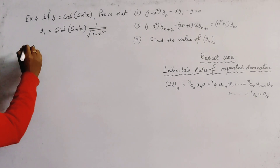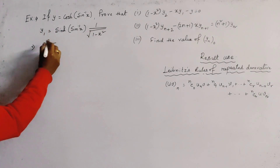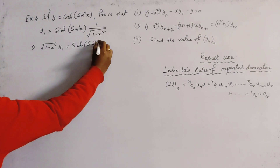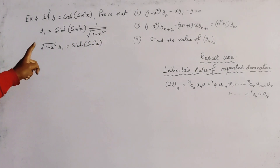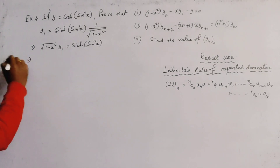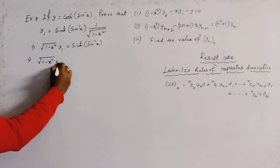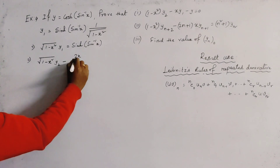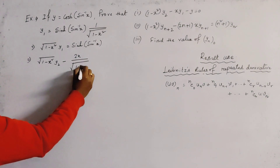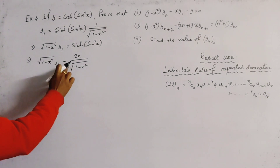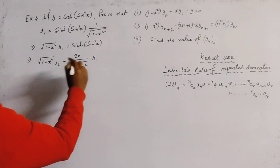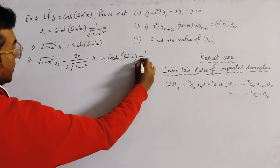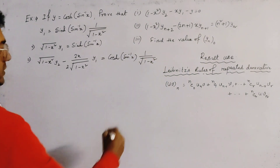Now we multiply through by the root (1 minus x squared) on the left side, getting: root(1 minus x squared) · y₁ equals sinh(sin⁻¹ x). Again we differentiate both sides with respect to x. The derivative of root(1 minus x squared) is minus 2x divided by 2·root(1 minus x squared), so the left side gives root(1 minus x squared)·y₂ minus x over root(1 minus x squared) · y₁. The right side becomes cosh(sin⁻¹ x) times 1 over root(1 minus x squared).